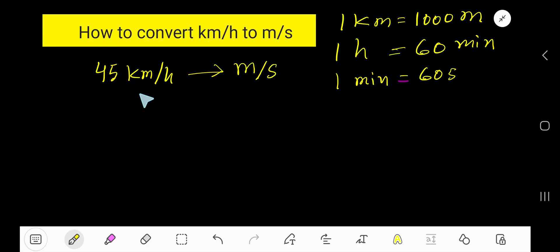How to convert 45 km per hour to meter per second? This is a specific example and we'd like to discuss how to convert km per hour to meter per second. Let me write the problem: 45 km per hour.